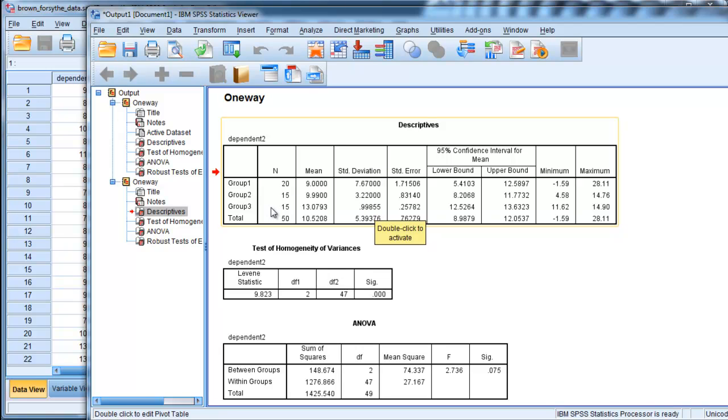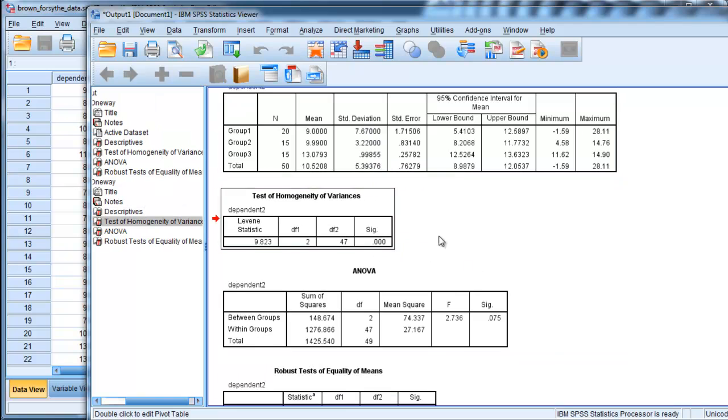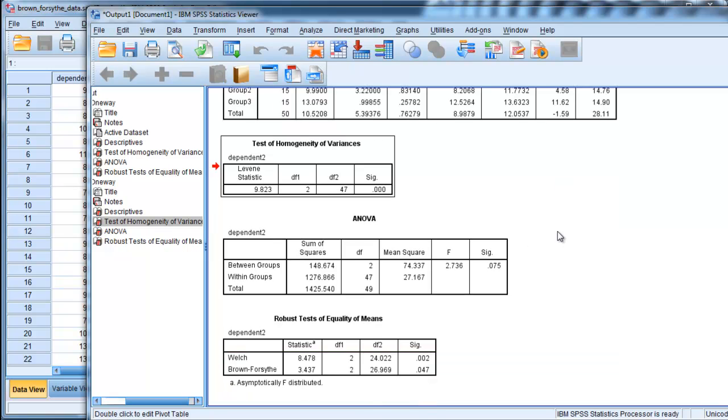Last example with dependent variable 1, this n of 15 had the 7.67 standard deviation, so I've flipped it. Homogeneity variance has been violated by Levine's test, as I would expect.